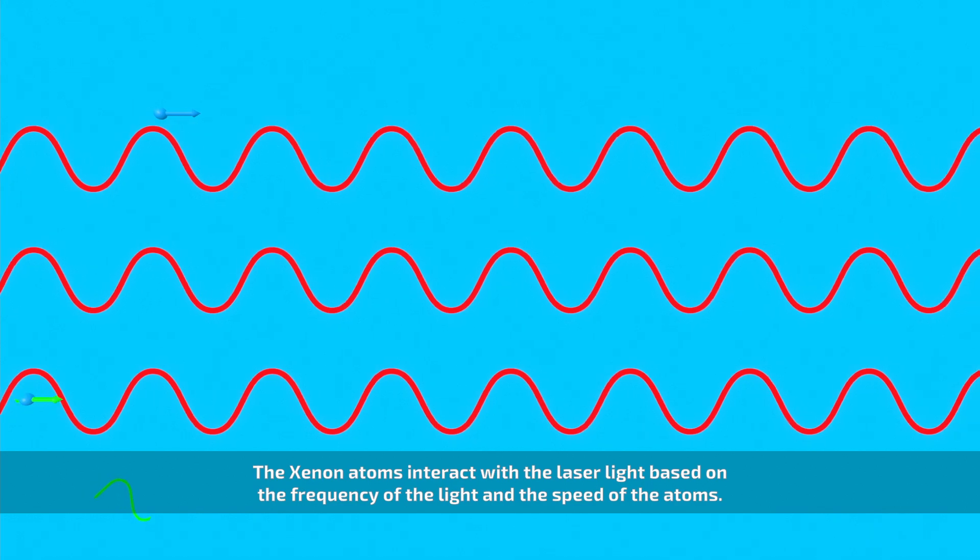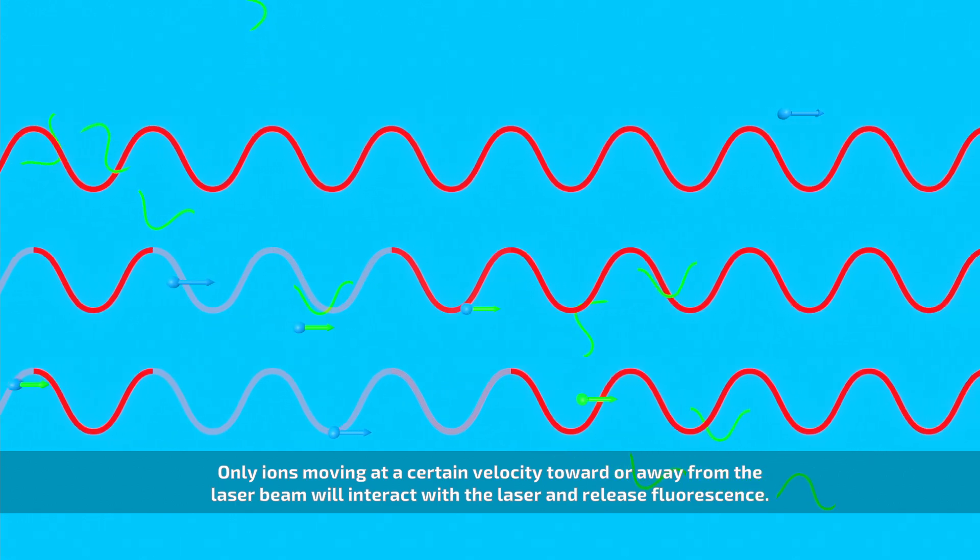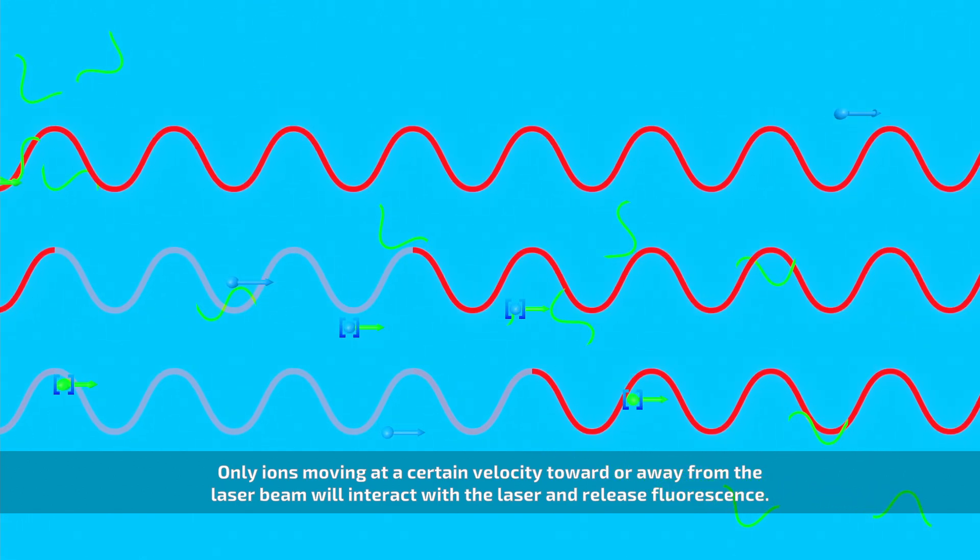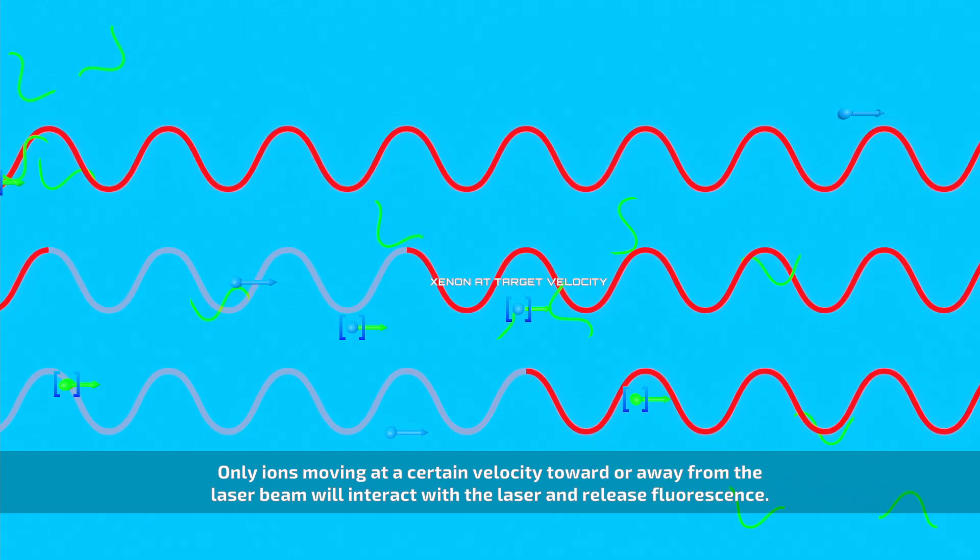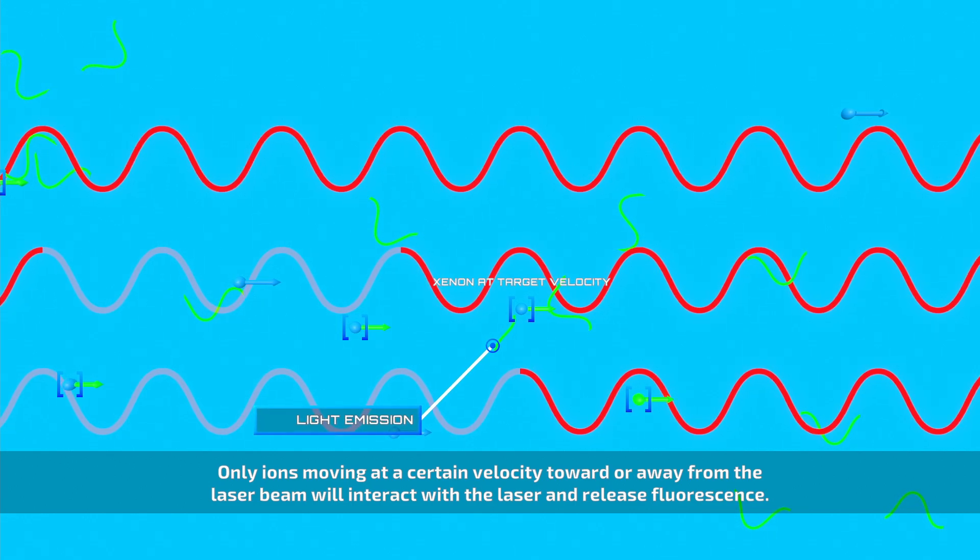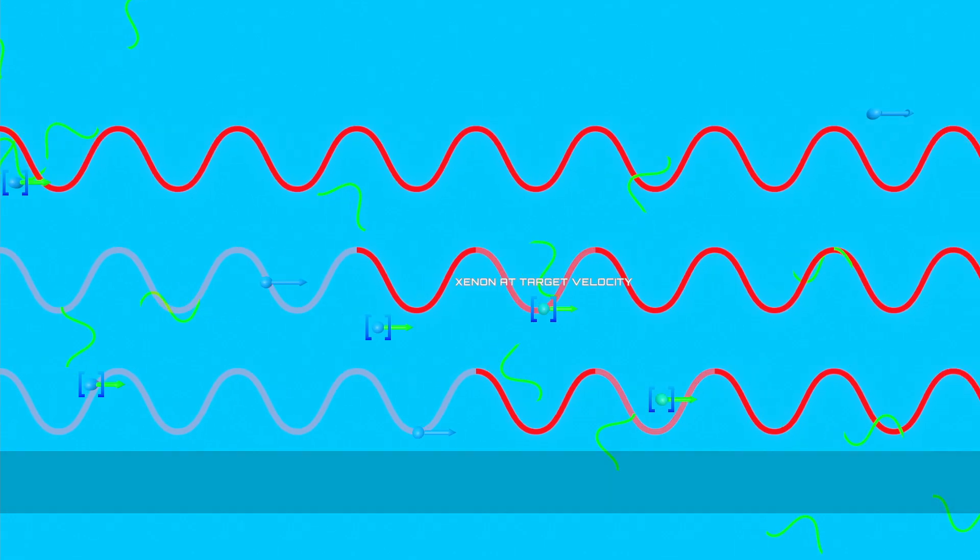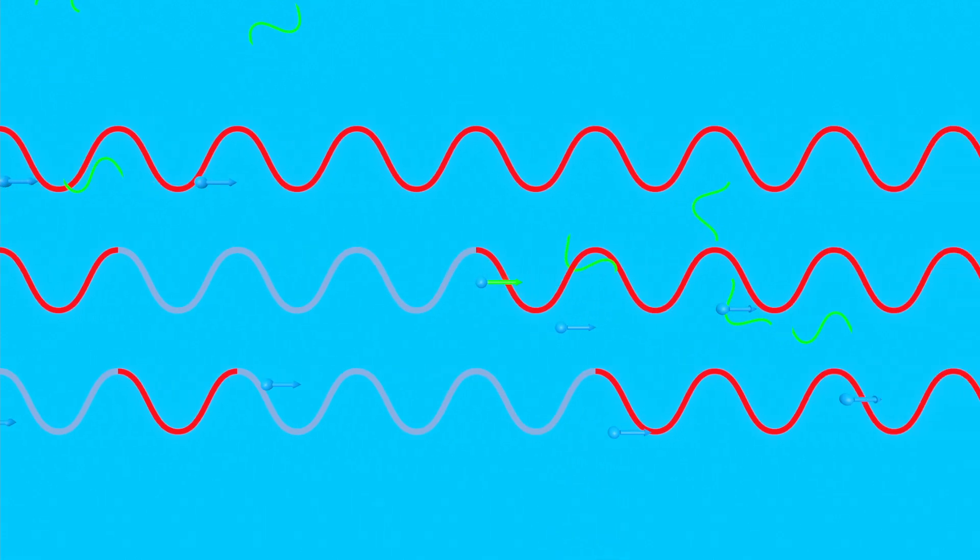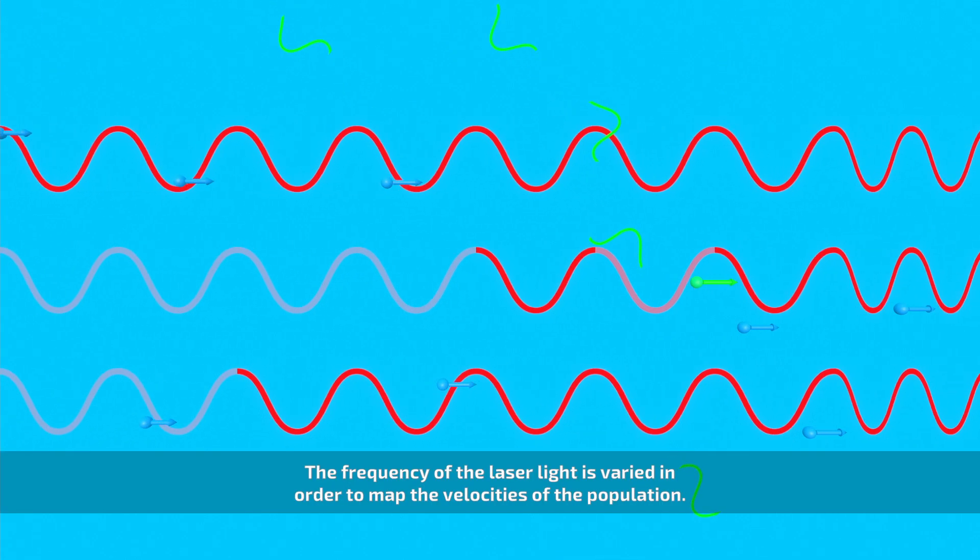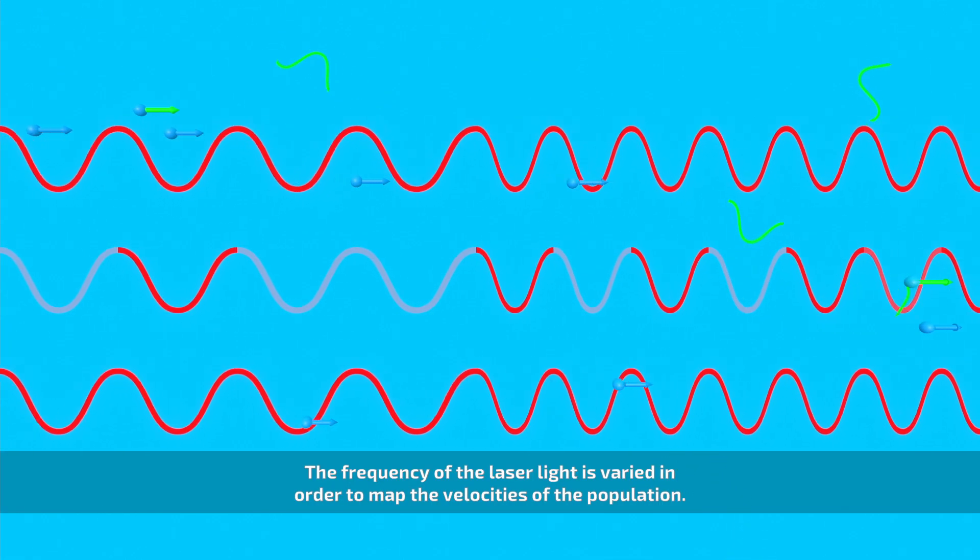The xenon atoms interact with the laser light based on the frequency of the light and the speed of the atoms. Only ions moving at a certain velocity toward or away from the laser beam will interact with the laser and release fluorescence. The frequency of the laser light is varied in order to map the velocities of the population.